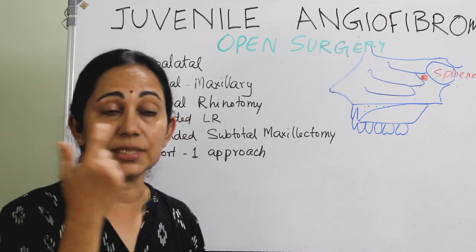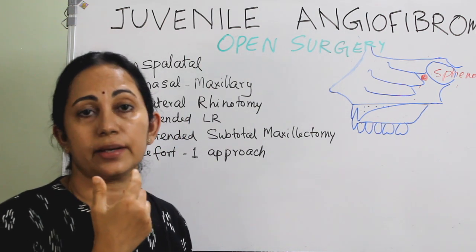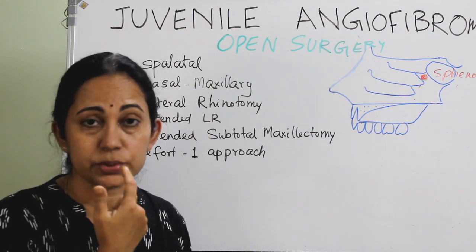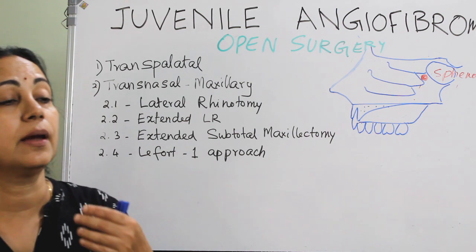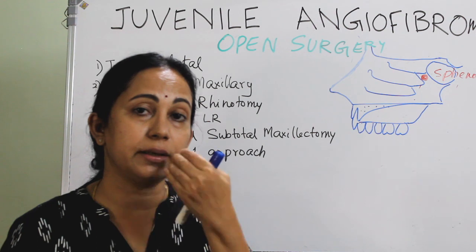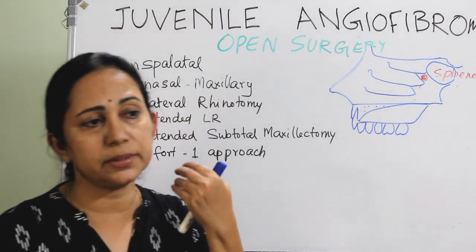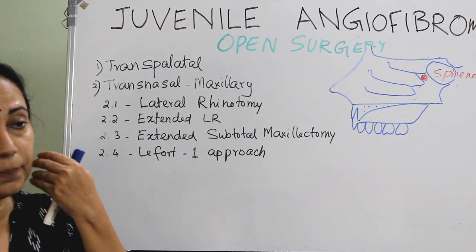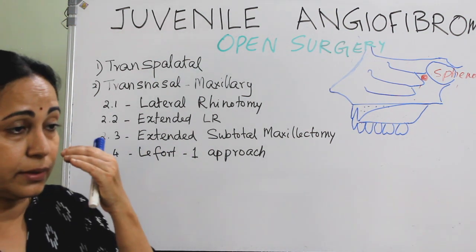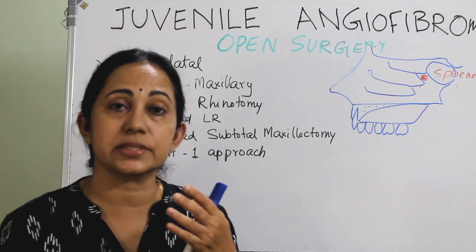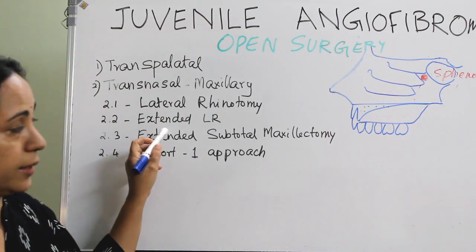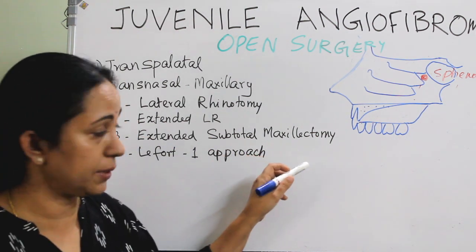You can go with a lateral rhinotomy and medial maxillectomy, or an extended lateral rhinotomy. The extended lateral rhinotomy uses the classical Moose incision, which curves through the alar of the nose into the nasal cavity. In an extended lateral rhinotomy, it goes downward with a paramedian lip-splitting incision, with the remaining part in the intraoral cavity. If the plane of dissection needs to go beyond the infraorbital neurovascular bundle, you have to use an extended lateral rhinotomy.